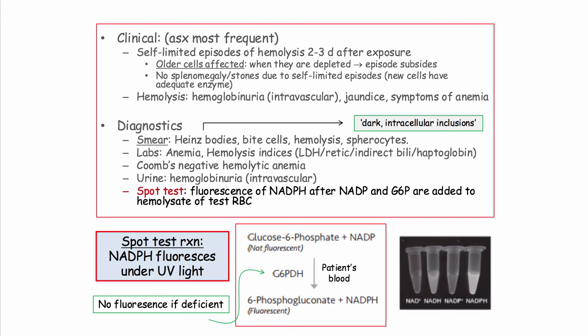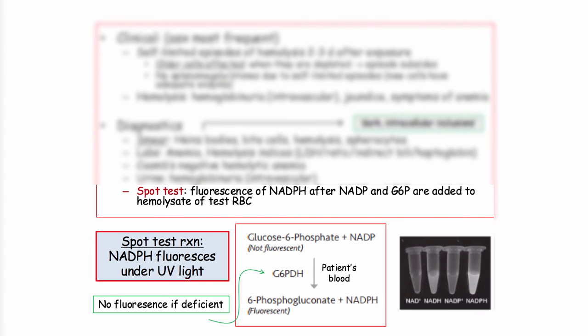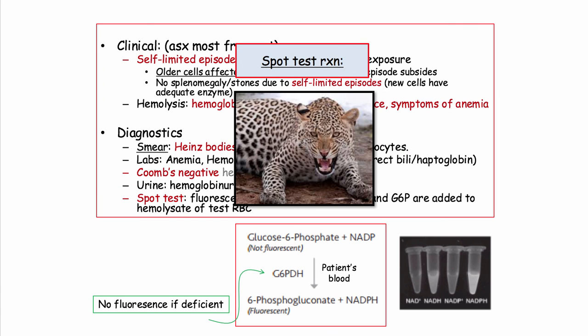The spot test: NADPH normally fluoresces when viewed under UV light. If we take glucose-6-phosphate plus NADP and mix it with blood from a non-deficient individual, 6-phosphogluconate plus NADPH are generated, and fluorescence is noted under UV light. If the patient is deficient in enzyme, NADPH will not be generated and the blood will not fluoresce under UV light.